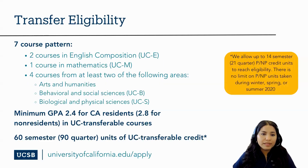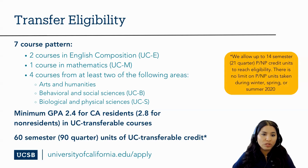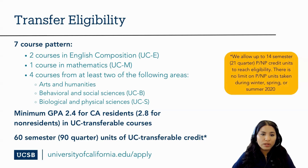UCSB only accepts applications for transfer admissions in the fall term. To be eligible for transfer admissions at any UC campus, applicants must complete these requirements by the end of the spring term before fall transfer. The seven course pattern includes two courses in English composition (UCE), one course in mathematics (UCM), and four courses from at least two of the following three areas: arts and humanities, behavioral and social sciences, and biological and physical sciences.